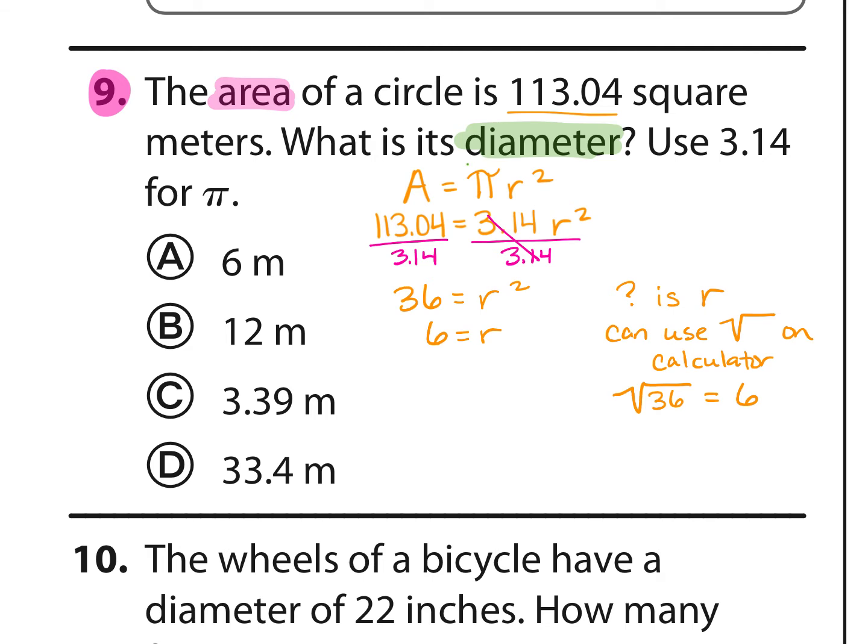Now we want to know what the diameter is. So we take the radius times 2 to get the diameter, and 6 times 2 is 12. Answer choice B, that's 12 meters.